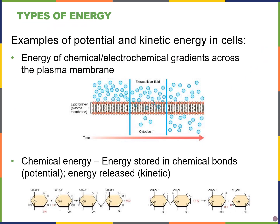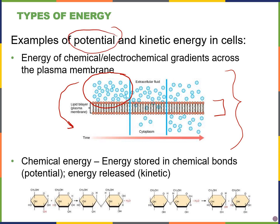What are examples of potential and kinetic energy inside cells? One example comes from diffusion: when there is a high concentration of a molecule on one side, there's high potential energy for the molecules to move. When they're actually moving, that's kinetic energy. Energy is released until the concentration of the molecule across both sides of the membrane is equal, and then there is just random movement across the membrane.